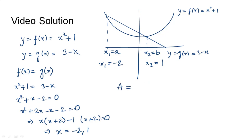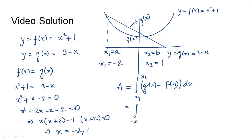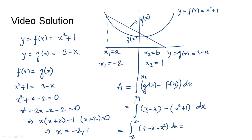So x1 is minus 2 and x2 is 1. To find the area between the two curves, since g(x) is on top and f(x) is on the bottom, we take the integration of g(x) minus f(x) dx between x1 and x2. This gives the integration from minus 2 to 1 of (3 minus x) minus (x squared plus 1) dx.